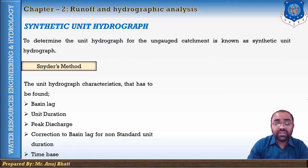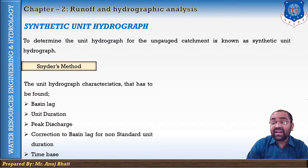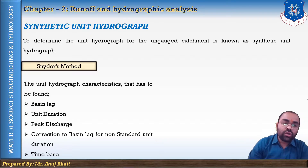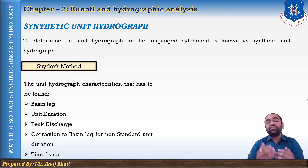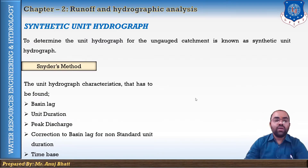The characteristics of the unit hydrograph that Snyder studied are: first, the basin lag; second, the unit duration; third, the peak discharge; fourth, the correction to the basin lag for non-standard unit duration; and fifth, the time base. From these unit hydrograph characteristics we can get the hydrograph of an ungauged catchment area.